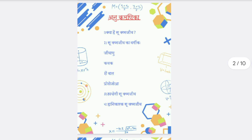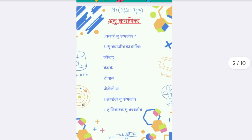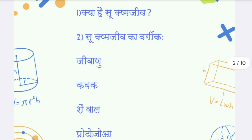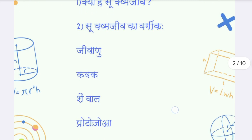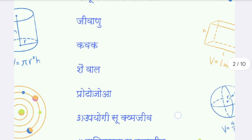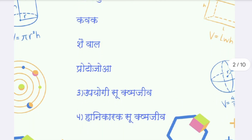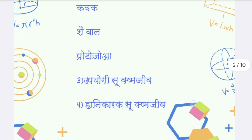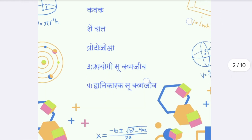Here is the index page, that is Anukarmanika. The first topic is Susham Jeev kya hai, number two is Susham Jeev ka Vargikaran — Jeevanu, Kavak, Shaival, Protozwa — then Upiyogi Susham Jeev, and the last one is Hanikarak Susham Jeev.